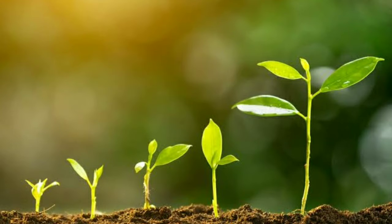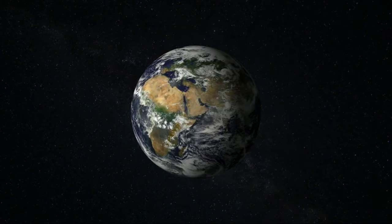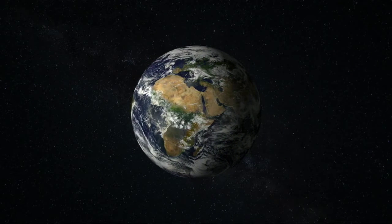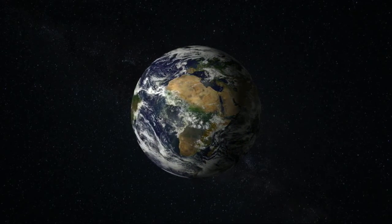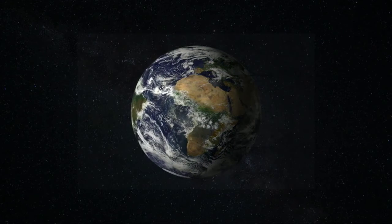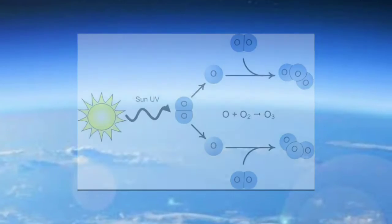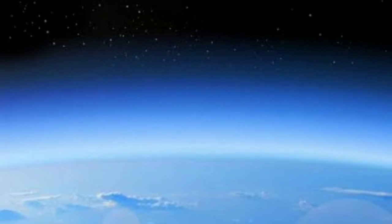The evolution of photosynthesis allowed the Sun's energy to be harvested directly by lifeforms. The resultant molecular oxygen, O2, accumulated in the atmosphere and, due to interaction with ultraviolet solar radiation, formed a protective ozone layer in the upper atmosphere.